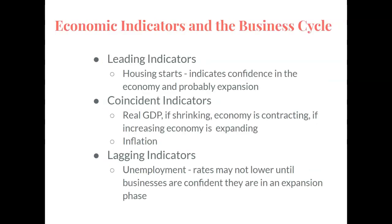How do we know if a contraction or an expansion is occurring? We use something called economic indicators. Leading indicators include something like housing starts. If you see an increase in housing starts — and this is reported on the news monthly — this indicates confidence in the economy and most likely an expansionary phase of the business cycle. Coincident indicators include something like real GDP: if it's shrinking, the economy is contracting; if it's increasing, the economy is expanding. Inflation is also another economic indicator of the business cycle.